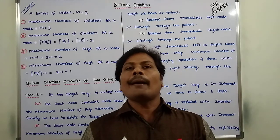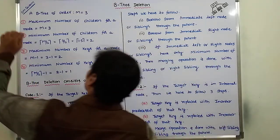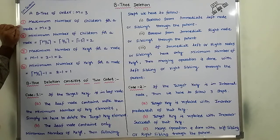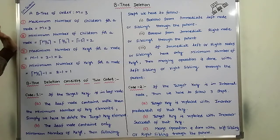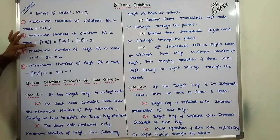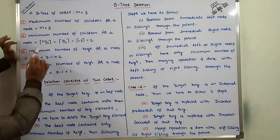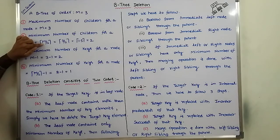A B-tree of order M satisfies the following conditions. First, the maximum number of children for a node is M. M is the maximum number of children allowed in the B-tree of order M. Next, the minimum number of children for a node is ceil(M/2), where we consider the ceiling value after performing the division operation.